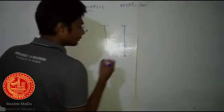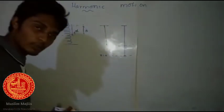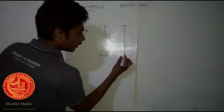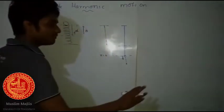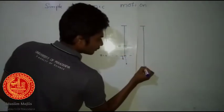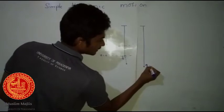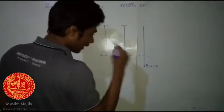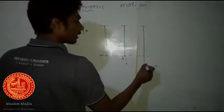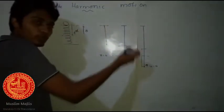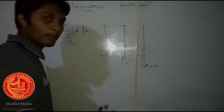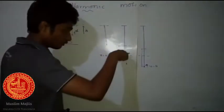Without any masses connected, the string just hangs. But if I connect the mass, the equilibrium position shifts. Let's say this equilibrium position is x equal to zero. If I pull it a little bit down from there and release it, the initial velocity u is equal to zero. After that, it comes back to equilibrium and continues oscillating — this motion is called simple harmonic motion.